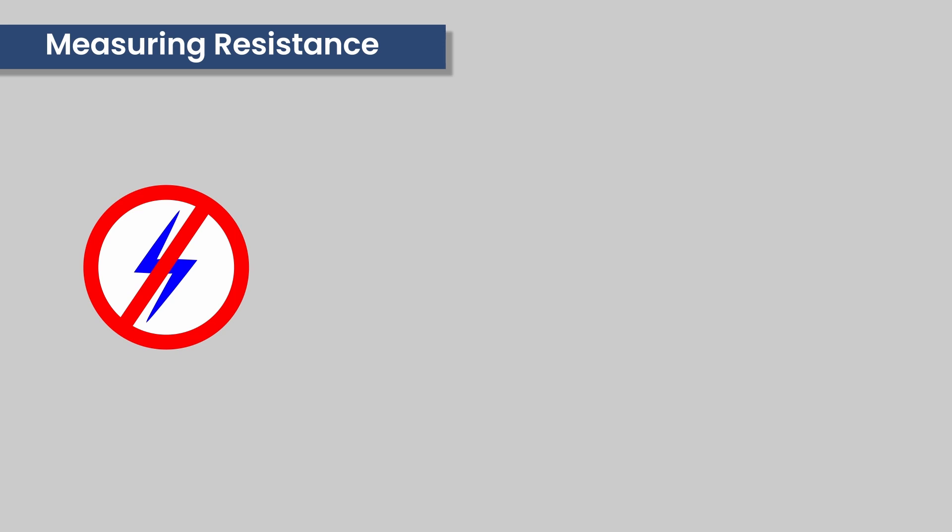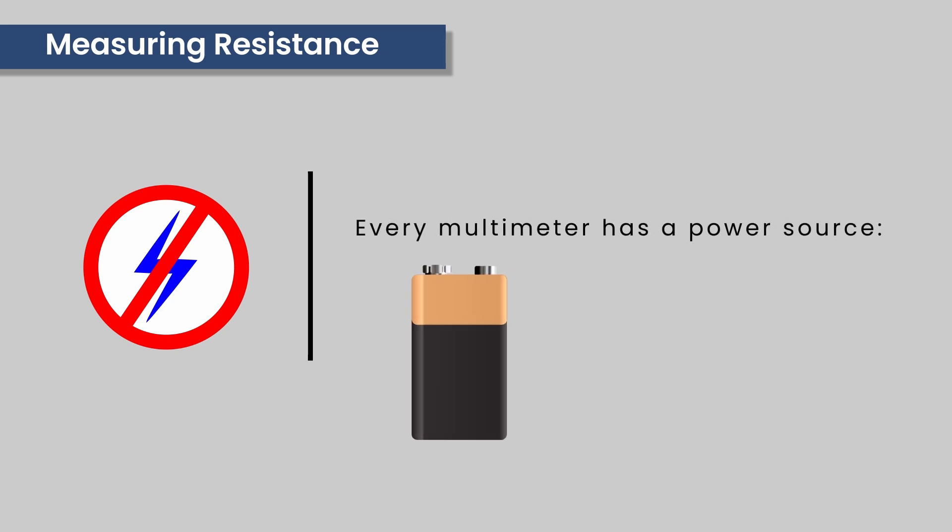Measuring resistance: when measuring resistance it is important that there is no current in the circuit while being measured. It will damage your ECU because every multimeter has a power source, either a battery such as a 9 volt in this case, or plugged into a wall outlet with some more expensive versions.